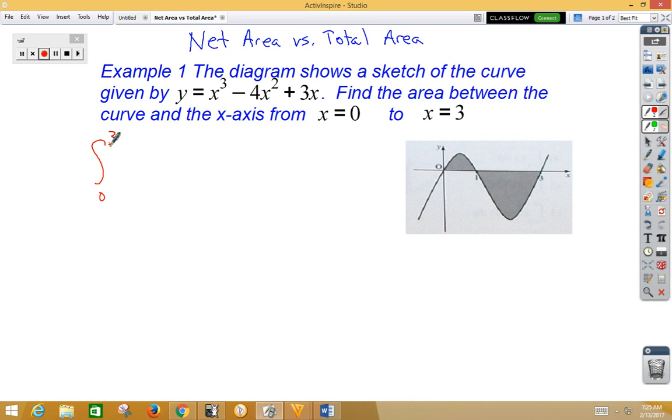Our function is x cubed minus 4x squared plus 3x dx. Very important that you remember on the AP exam to write out everything the way you're going to integrate it. You need to include the parentheses and the dx, otherwise AP will bust you. If we go ahead and integrate that, we get x to the 4th over 4 minus 4x cubed over 3 plus 3x squared over 2 from 0 to 3.